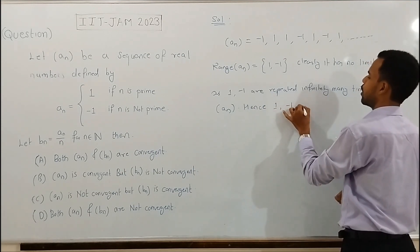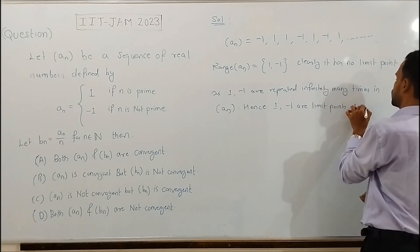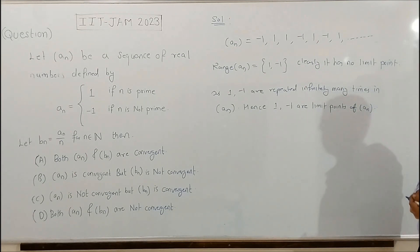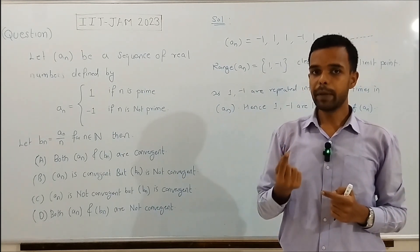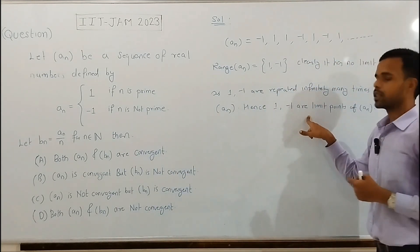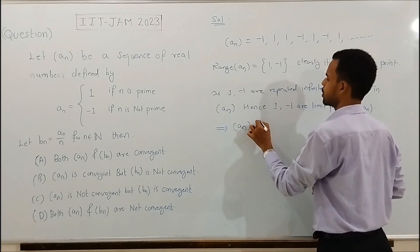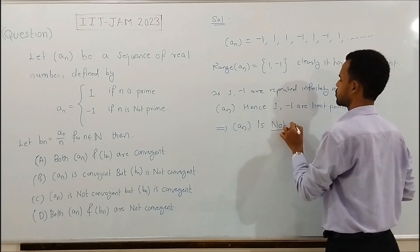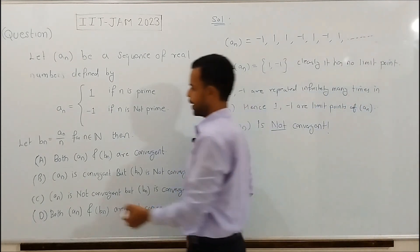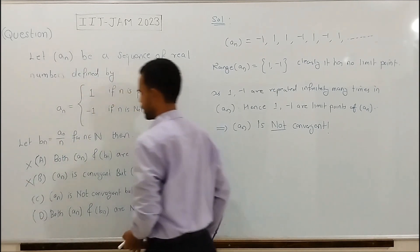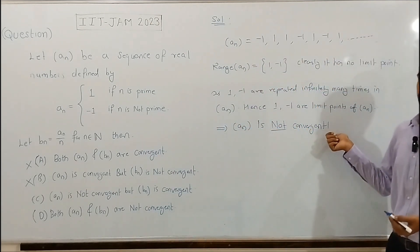Hence, 1 and -1 are limit points of sequence an. But a convergent sequence has a unique limit point. Since this sequence has two limit points, this implies sequence an is not convergent. So option a is discarded and option b is also discarded, because both option a and b state that sequence an is convergent.